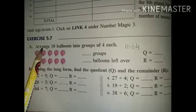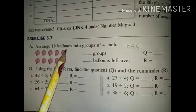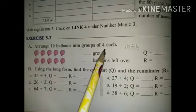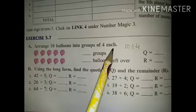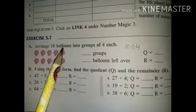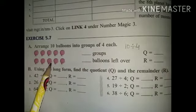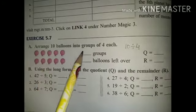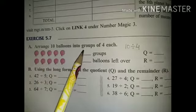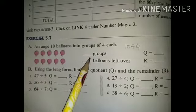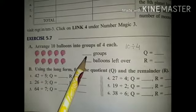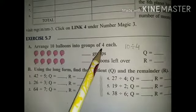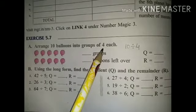Point A: arrange 10 balloons into groups of 4 each. The number of balloons is 10. We need to find the number of groups. One group has 4 balloons.